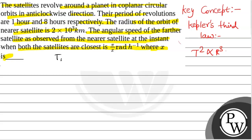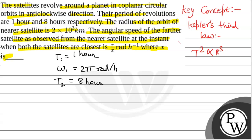We have t1 equal to 1 hour, so omega 1 is equal to 2 pi radian per hour. t2 is equal to 8 hours, so omega 2 is equal to pi by 4 radian per hour. And r1 is equal to 2 into 10 to the power 3 km.